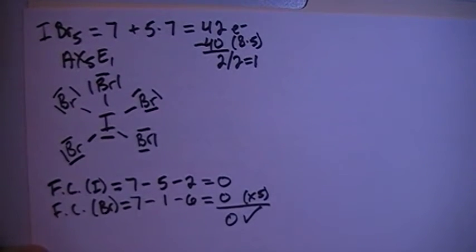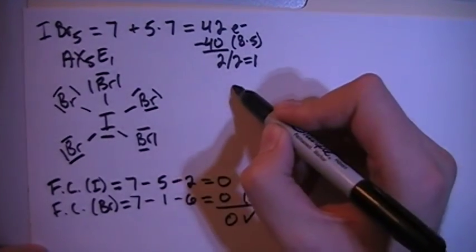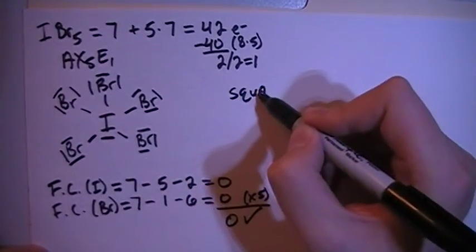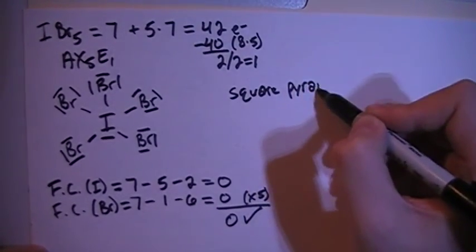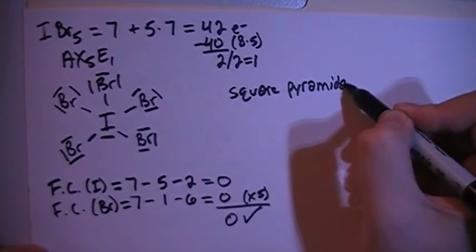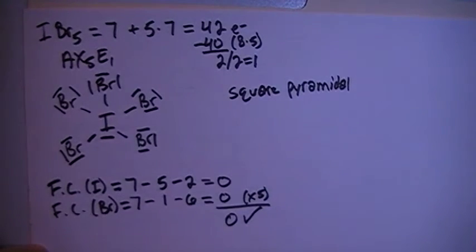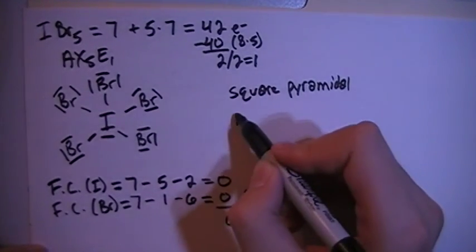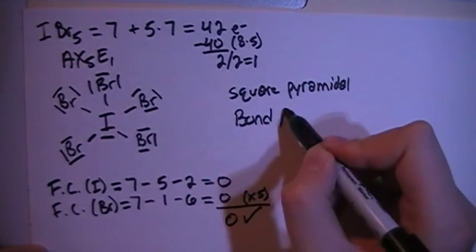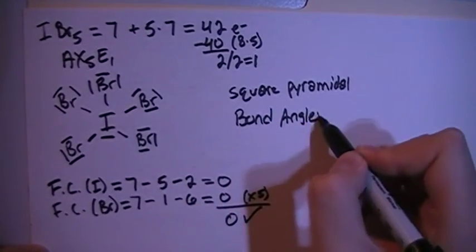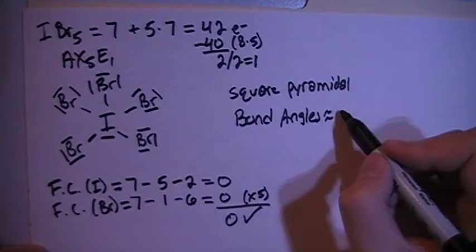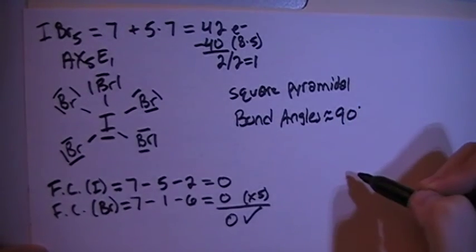In terms of shape, when we have the AX5E1 type of structure, your shape is going to be called square pyramidal. So basically a pyramid that has a square base. And when you have that kind of shape, the bond angles are going to be approximately equal to 90 degrees.